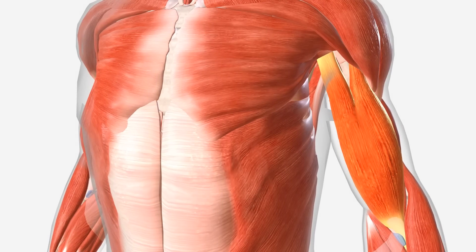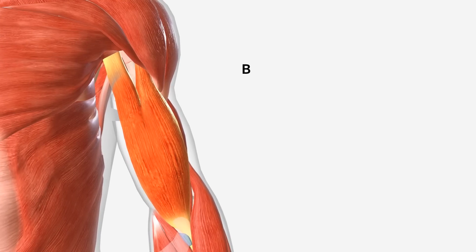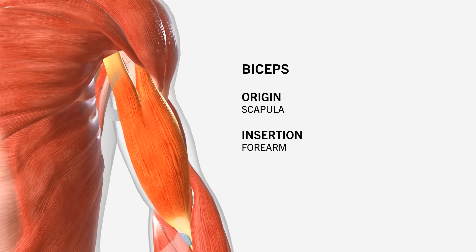Let's look at a simple muscle like the biceps. The biceps originate at two different points on the scapula and insert onto the bones of the forearm. The fibres of the biceps all run in essentially the same direction, meaning they all pretty much perform the same functions. This is primarily going to be elbow flexion — bending the elbow like we see during a bicep curl.